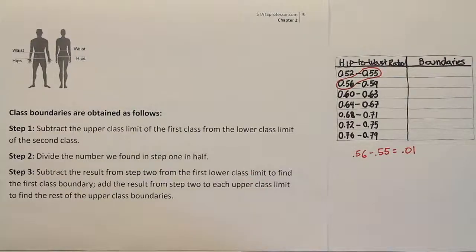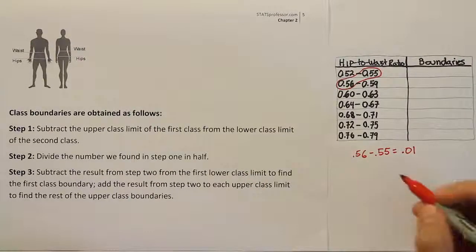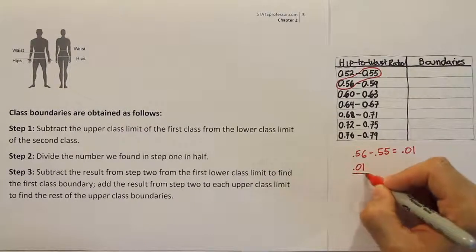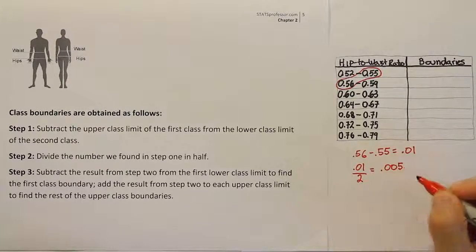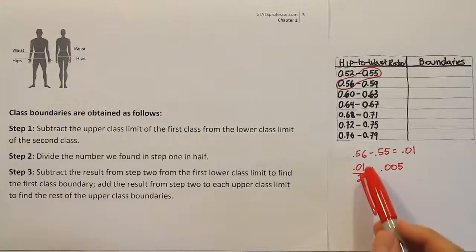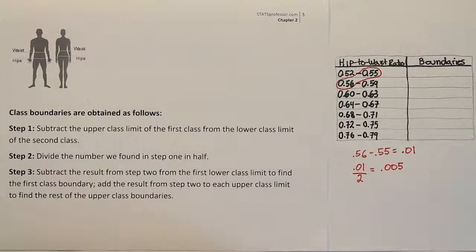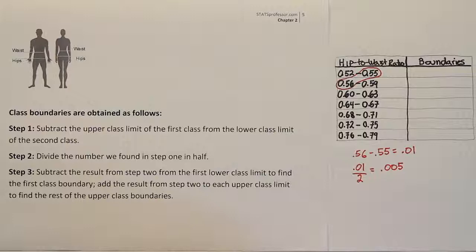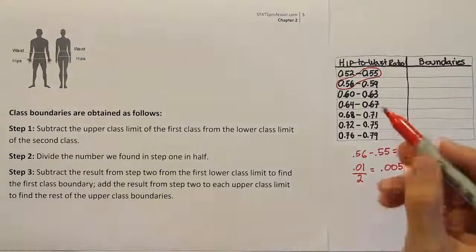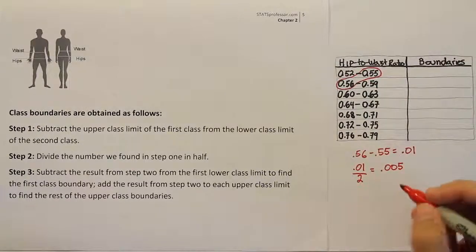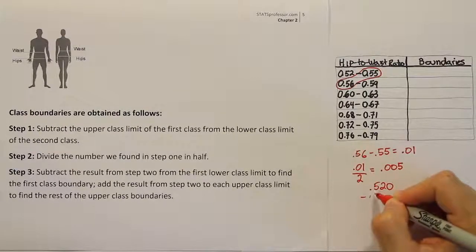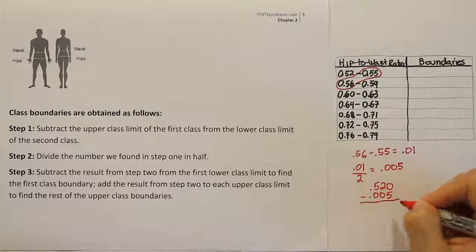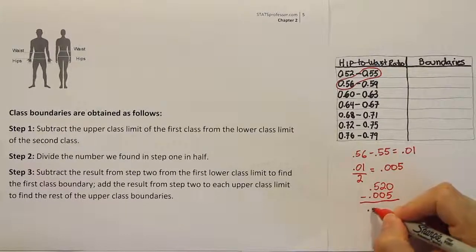Step 2 is to divide that number we just found in half. So we take .01 and divide it by 2, which gives us .005. Now in step 3, we subtract that result from the first lower class limit to find the first class boundary. So we take .520 minus .005, and we get .515.